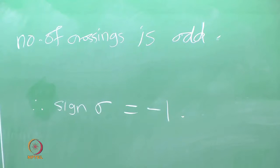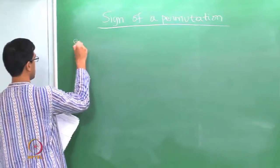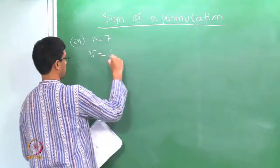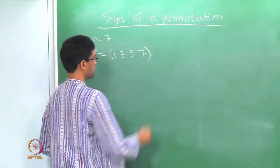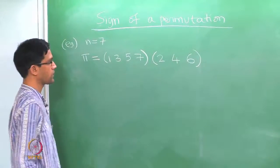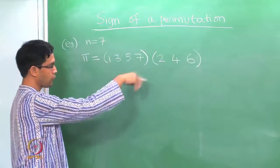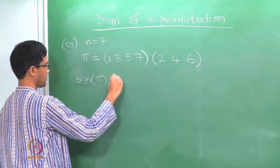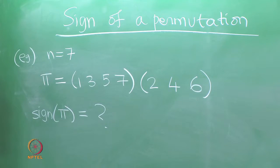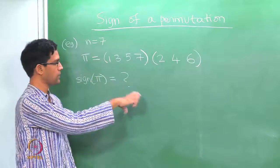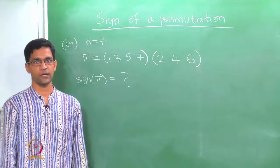Now let us do a more complicated example showing how to combine two different cycles. Take n equals 7 again and a permutation that maps 1, 3, 5, 7 cyclically among themselves while also mapping 2, 4, 6 cyclically among themselves. This gives a 4-cycle on {1,3,5,7} and a 3-cycle on {2,4,6}. Counting crossings directly would be complicated since the lines criss-cross each other.